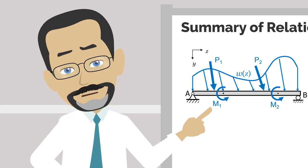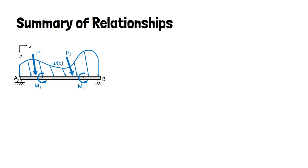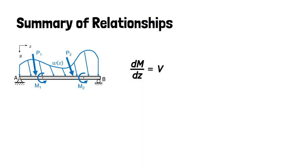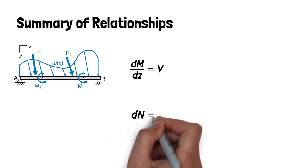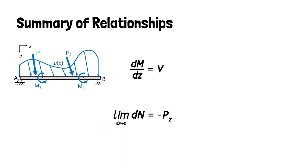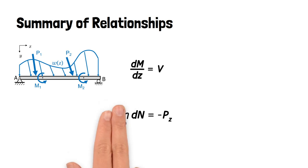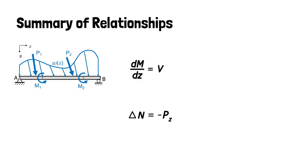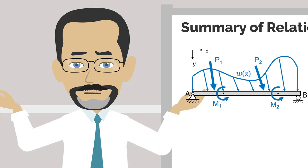Let's quickly summarize what we have observed so far. We have shown that the rate of change of the internal bending moment, dm divided by dz, is equal to the internal shear force at that point. Furthermore, the change in internal normal force dn in the positive z direction is equal to the negative of the point force pz. Taking the limits of this differential term as the width of the element approaches zero, this simply becomes delta n is equal to negative pz.